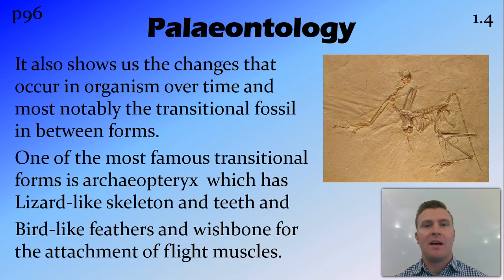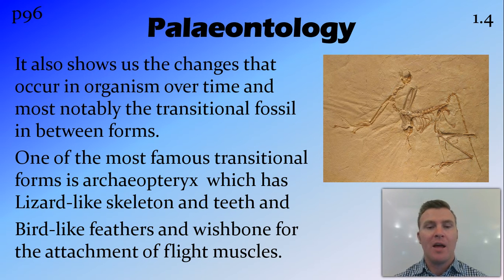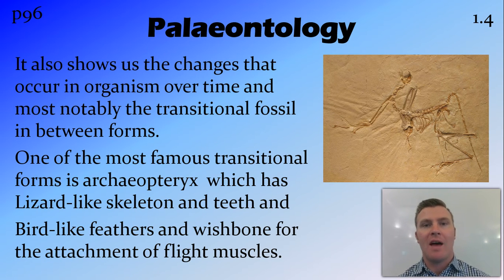Something in particular that shows us these changes from one organism to another is transitional fossils. Transitional fossils are those missing links that show the transition between two different ancient forms. One of the most famous of these transitional fossils is the Archaeopteryx, which is the transition between lizards and birds. While it has a lizard-like skeleton and teeth, it has evidence of feathers and a wishbone for flight muscles, similar to that of the birds which came after it. So that's the link between those two classes of animals.